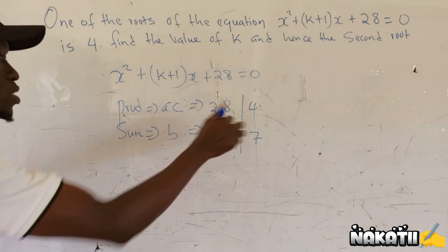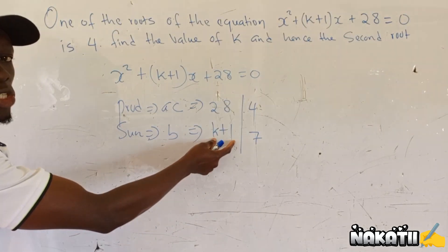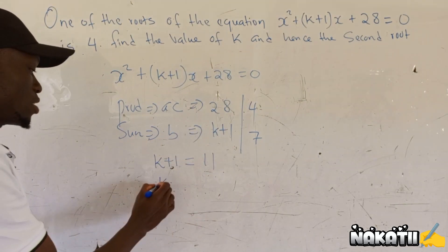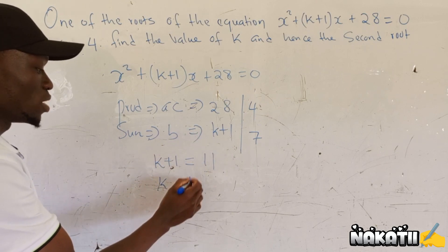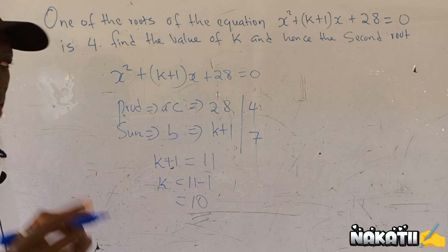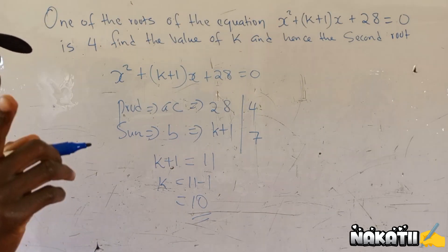So to get the value of k, we just add these two and then we equate to this one, and we're going to have k plus 1 equals 11. To get k, we take this one the other side. It will be 11 minus 1, and our k will be 10. And that is how we solve that question. Thank you for watching.